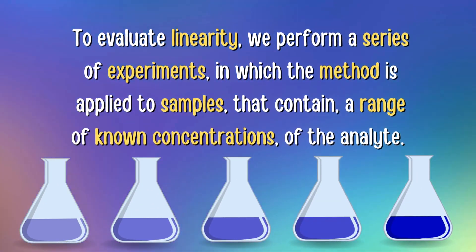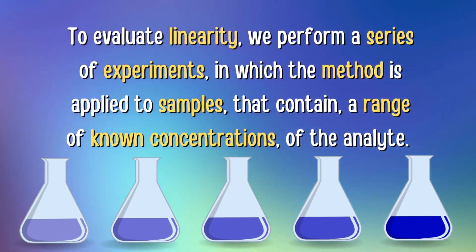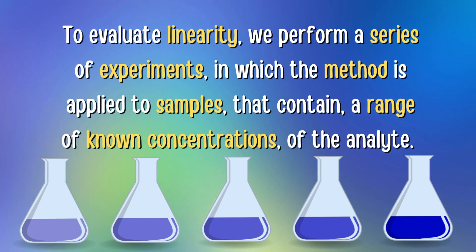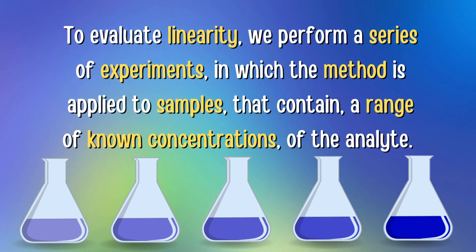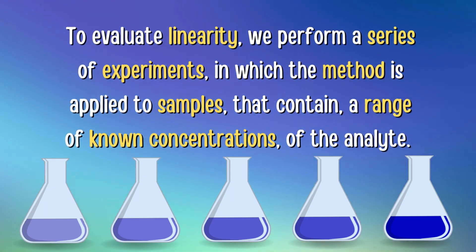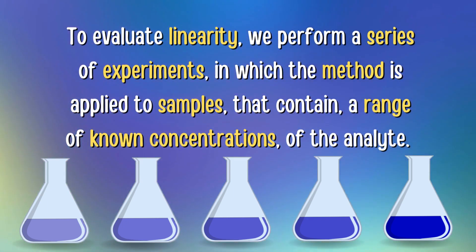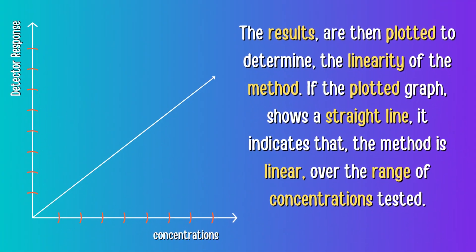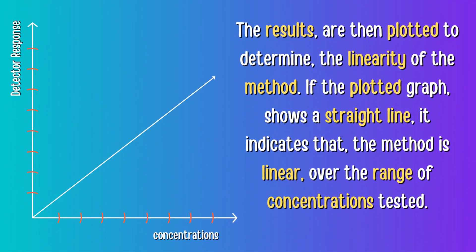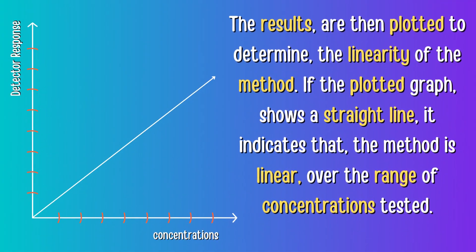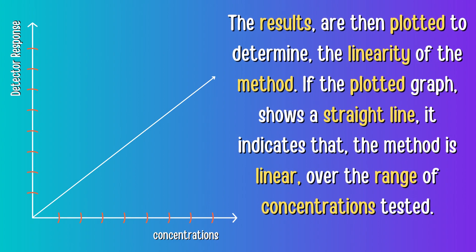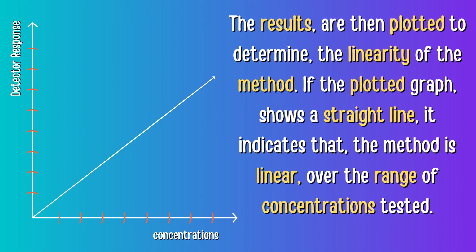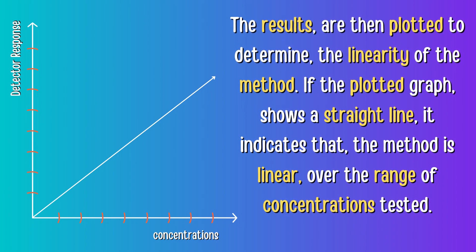To evaluate linearity, we perform a series of experiments in which the method is applied to samples that contain a range of known concentrations of the analyte. The results are then plotted to determine the linearity of the method. If the plotted graph shows a straight line, it indicates that the method is linear over the range of concentrations tested.